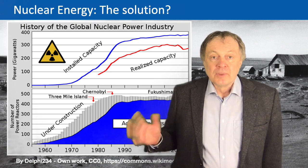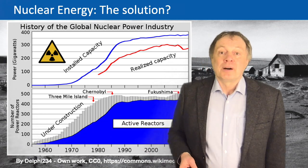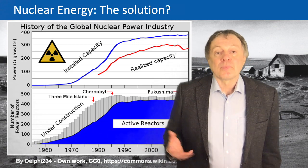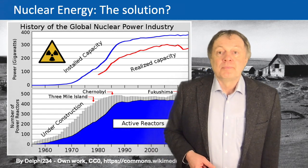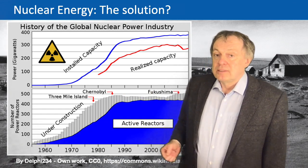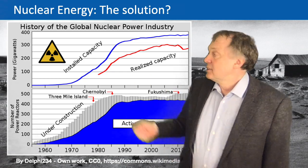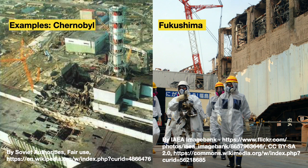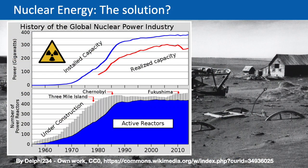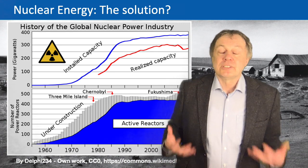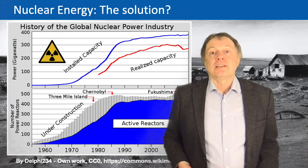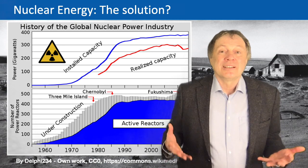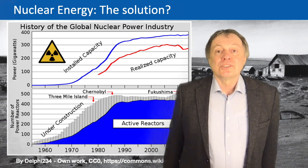Since then, the increase of nuclear power has been almost zero. We are at around 400 operational nuclear power reactors — sometimes more, sometimes less. Then in the 2010s there was the accident in Fukushima, which again caused a problem to the nuclear industry. Even more people were convinced that even in a highly developed and industrialized country with many safety regulations, nuclear power is not really safe under all circumstances.